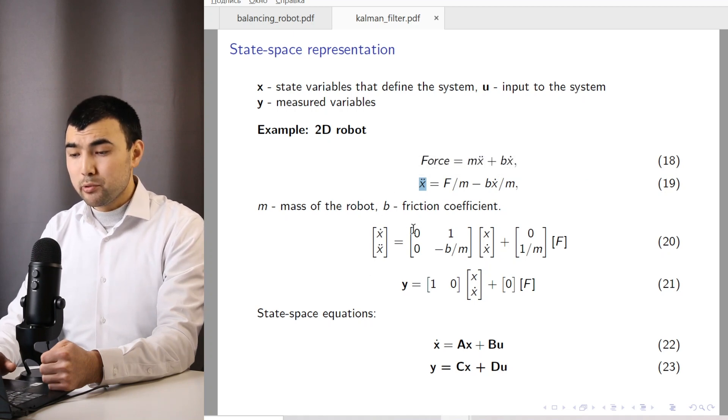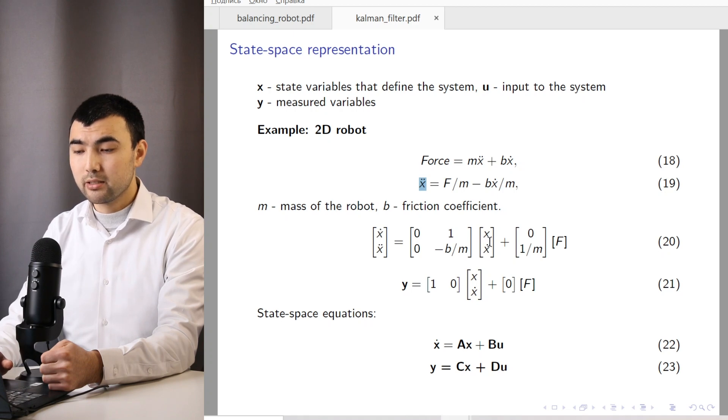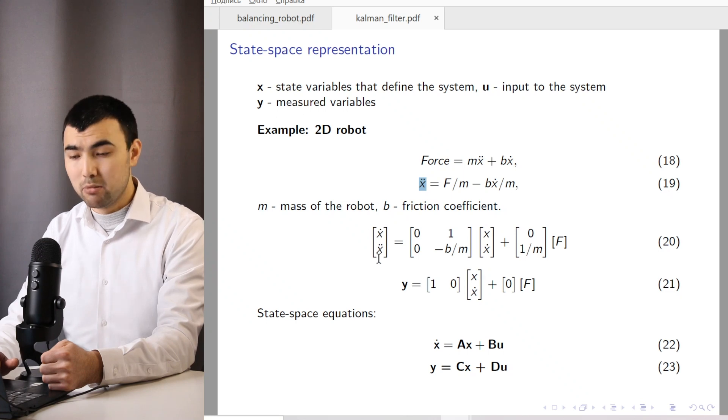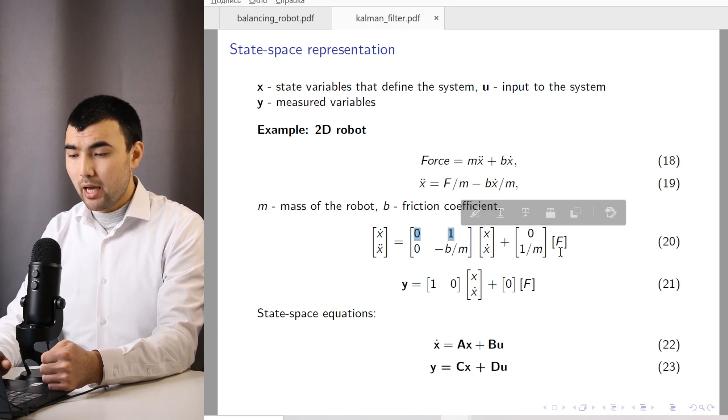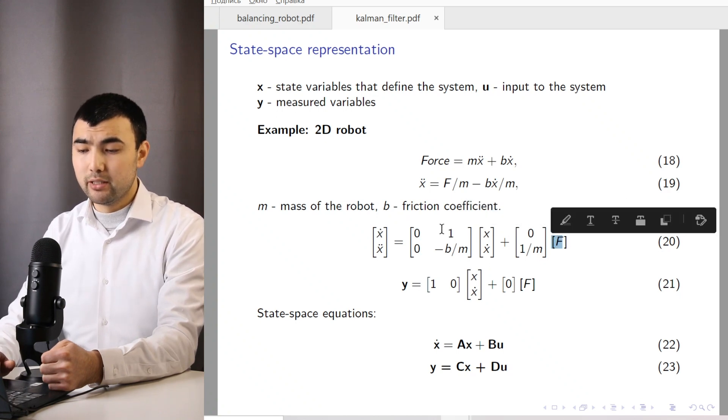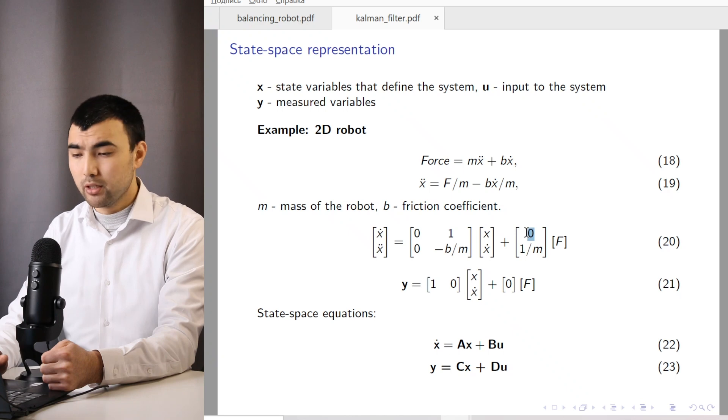And the next step is to write the state-space equation. So we have X and X dot as state variables. And if we take the derivative, we get X dot and X double dot. And X dot, among state variables, we already have X dot. So the first row of this matrix would be 0, 1. And F doesn't affect the velocity directly. So we have 0 here.